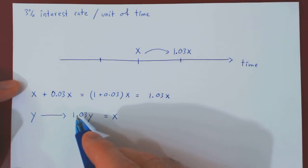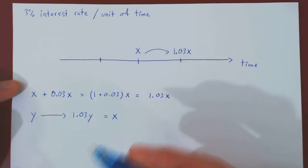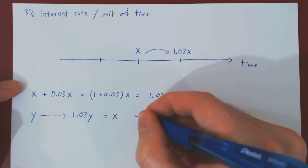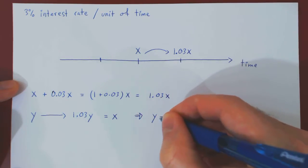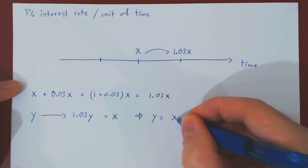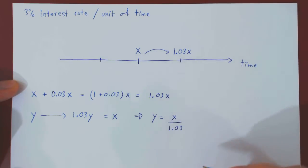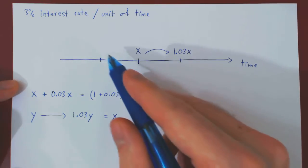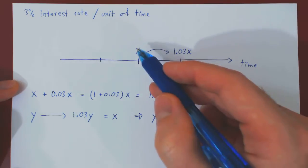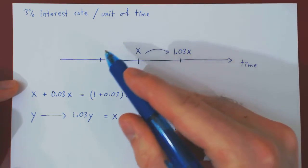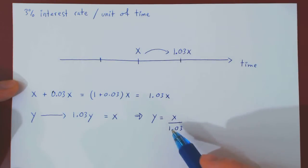So solving for Y is quite simple. Divide across by 1.03. Therefore, Y is X divided by 1.03. So this is the value of X dollars, but pushed backward in time by one unit.